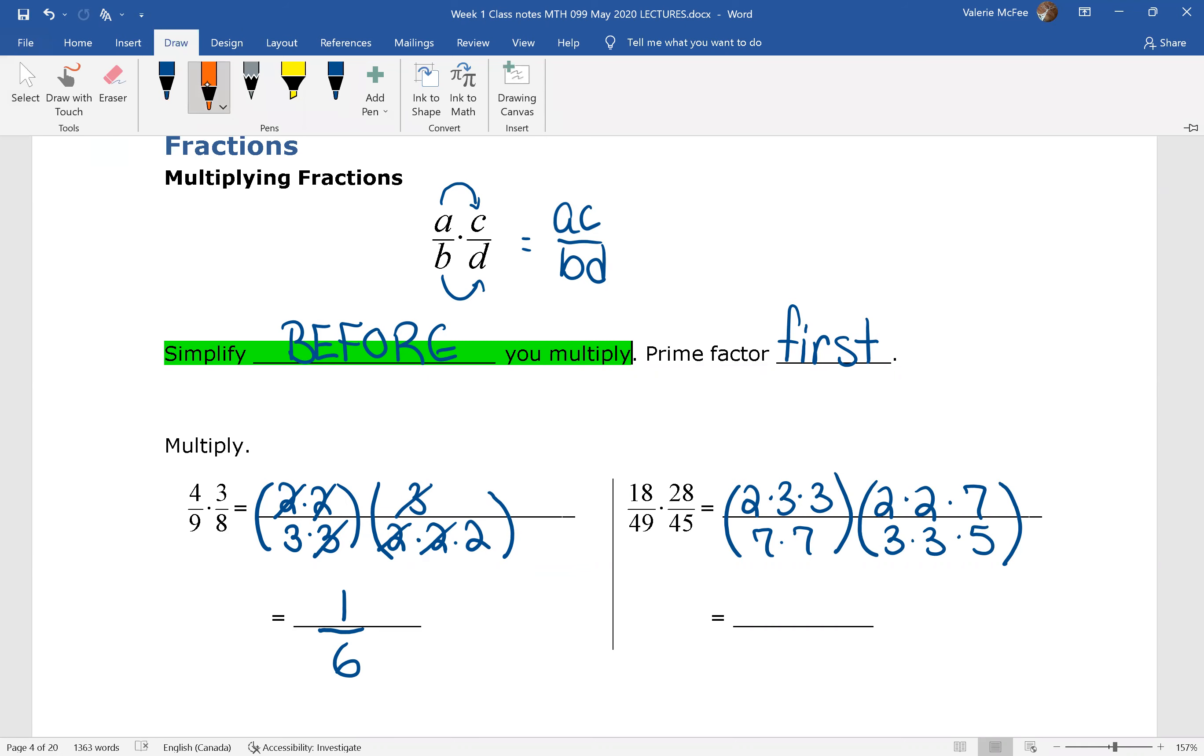So we see seven is common. Three divides three. Three divides three. Is that it? What do I have left in the numerator? Two times two times two, all over seven times five. 35. Did you get that? Good.